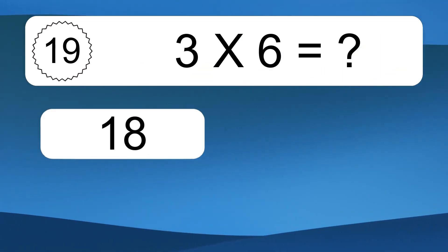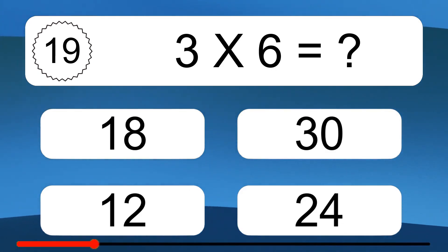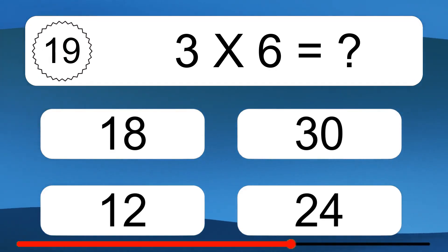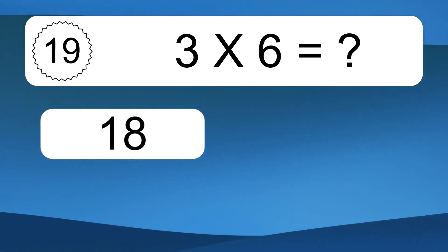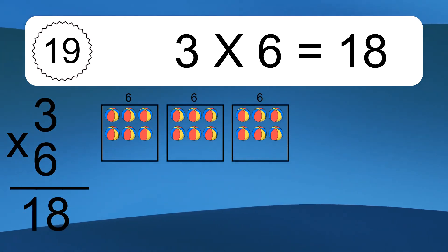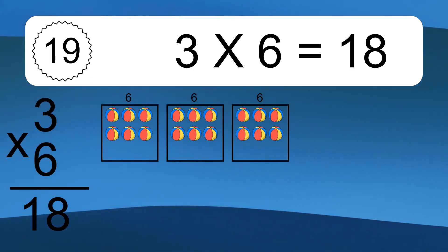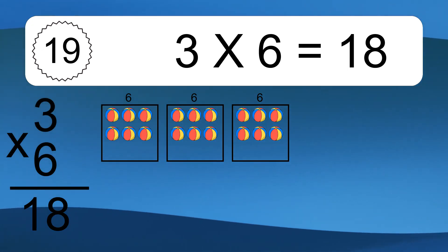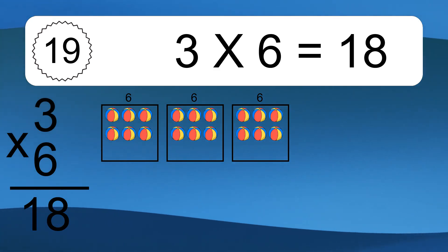3 times 6 equals what? 3 times 6 equals 18. We have 3 boxes, and each box has 6 colorful balls inside. If you count all the balls in all the boxes together, you will have 3 times 6 balls. This equals 18 balls.